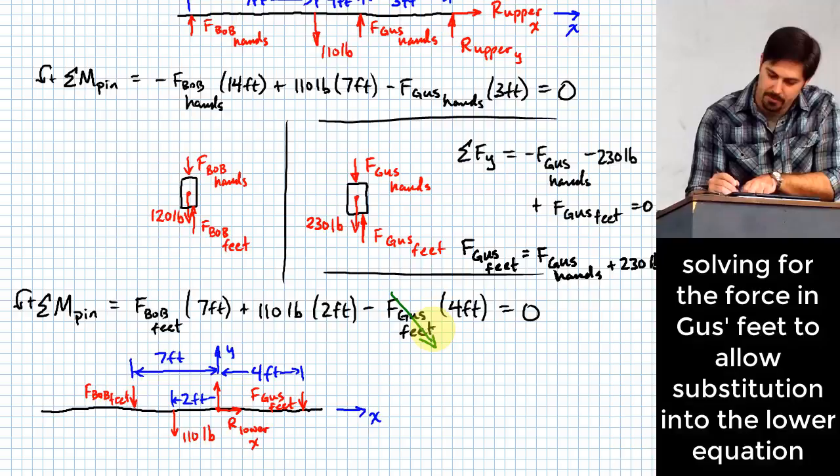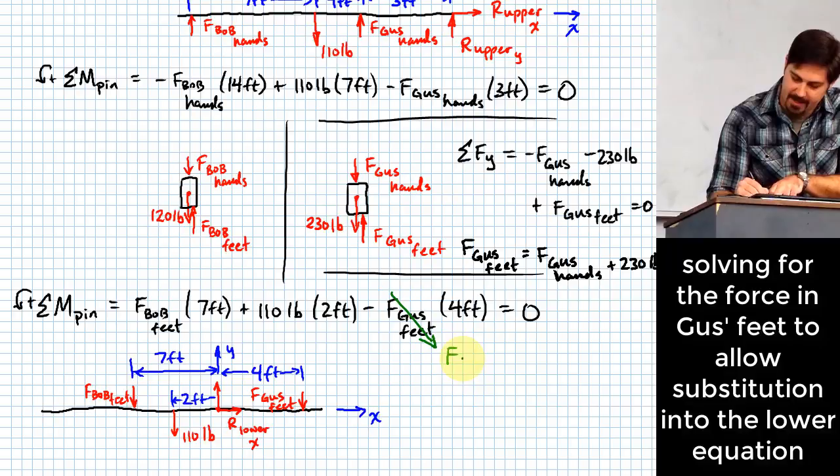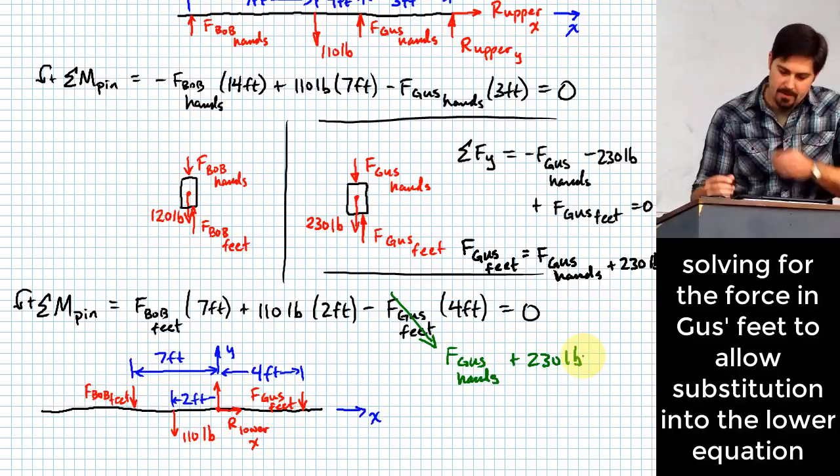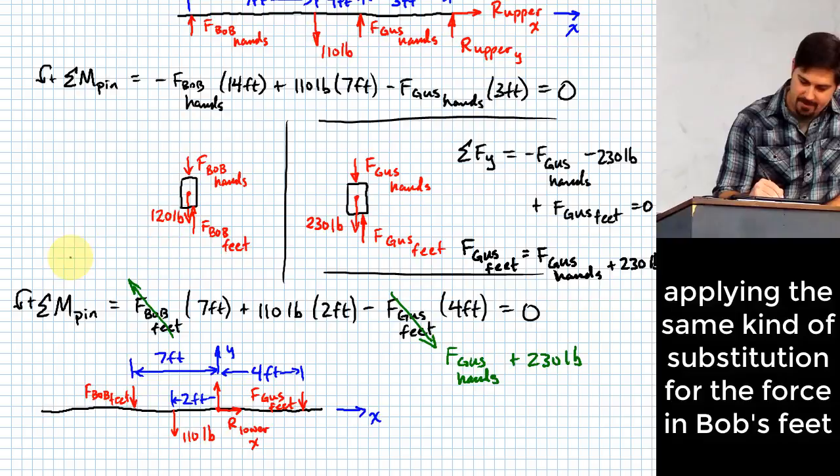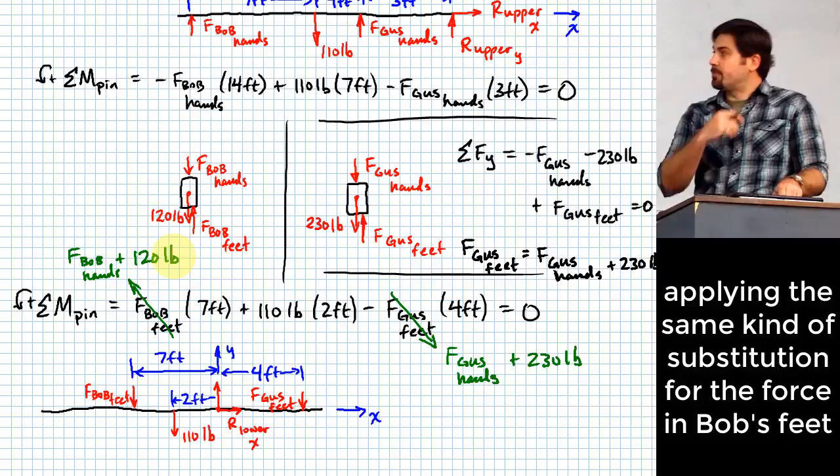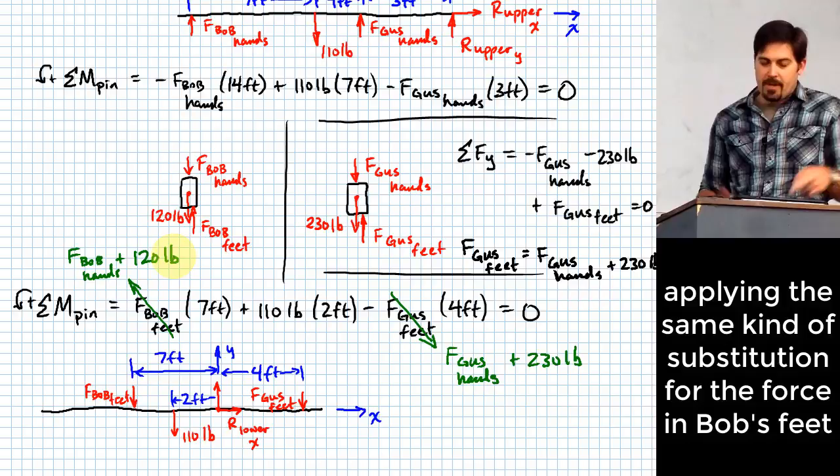And so now I can go ahead and apply the substitution. Same one to this. This is actually a proper one now. So F_Gus feet is going to be equal to F_Gus hands plus 230 pounds. And then what am I going to do, you think, for F_Bob feet? It's going to be equal to F_Bob hands. Then what? Plus 120 pounds. And that would be based on the same type of thing on that free body diagram. A sum of forces in the vertical direction.